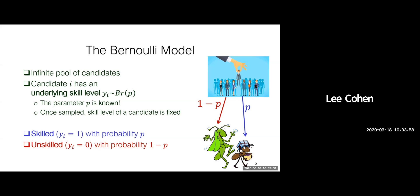In our work there are two types of models, and we're going to start with the Bernoulli model. We assume we have an infinite pool of candidates. Each candidate i has a binary skill level y_i, which is sampled from a Bernoulli distribution with a known parameter p. Once sampled, the skill level of a candidate is fixed and permanent. Each candidate is either skilled — y_i equals 1 with probability p — or unskilled with probability 1 minus p.